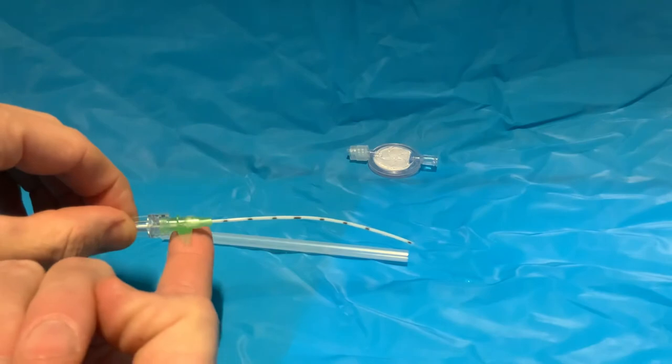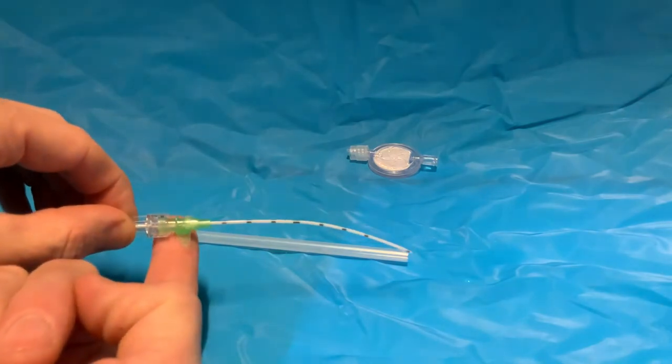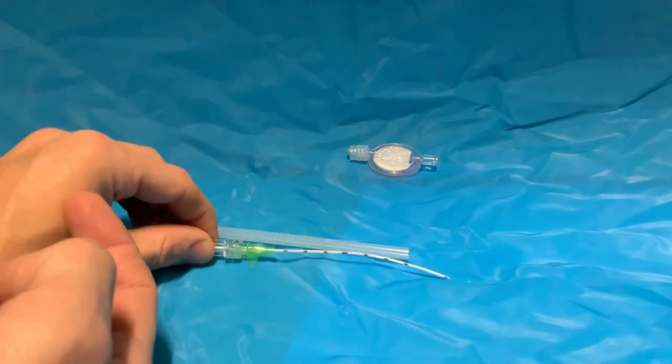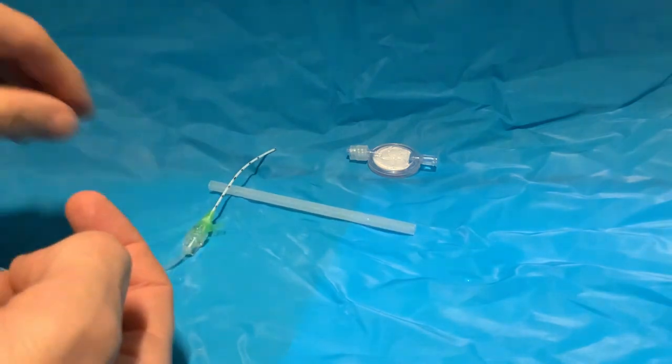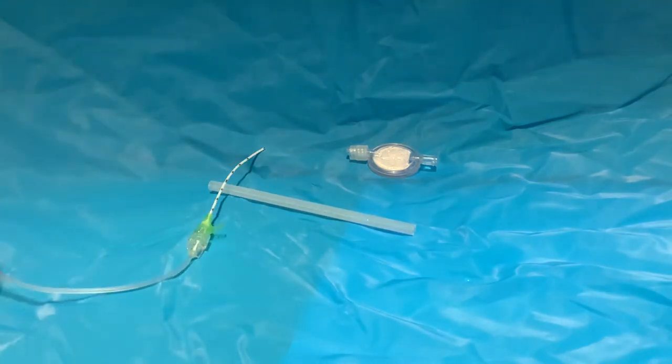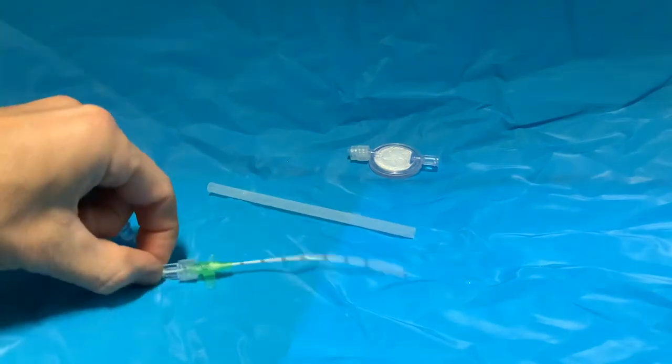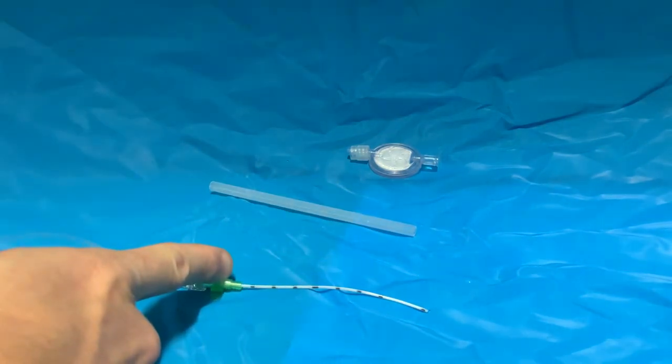A little bit of opsite underneath here, padded opsite, to protect the skin is a good idea. Generally, don't use skin glue in these because the size of the hole that you've created is sealed by the cannula.